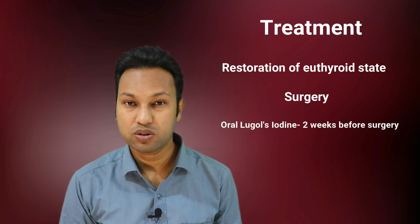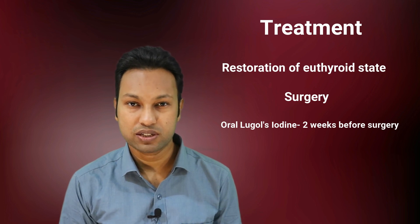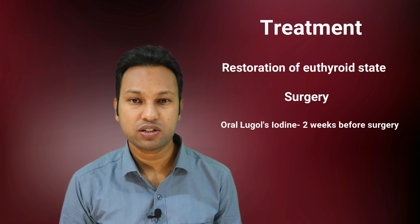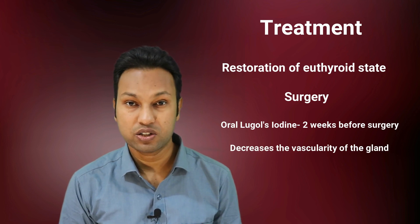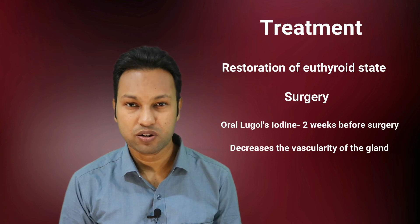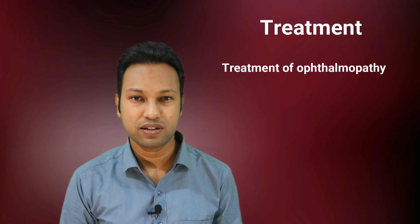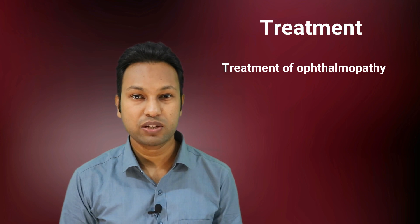Then, two weeks before surgery, thionamides should be stopped and oral potassium iodide or Lugol's iodine solution should be given twice daily for 14 days. This iodine solution decreases the vascularity of the thyroid gland, thus reducing intraoperative blood loss.